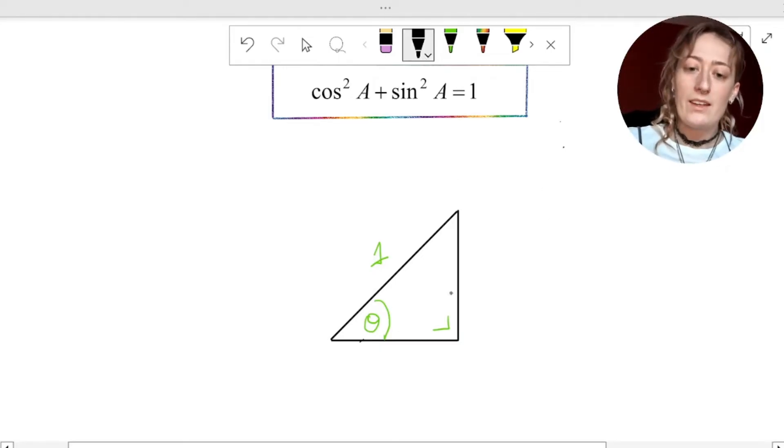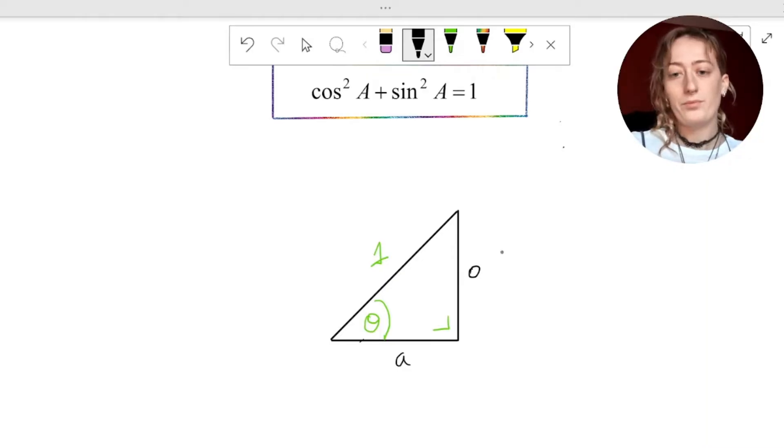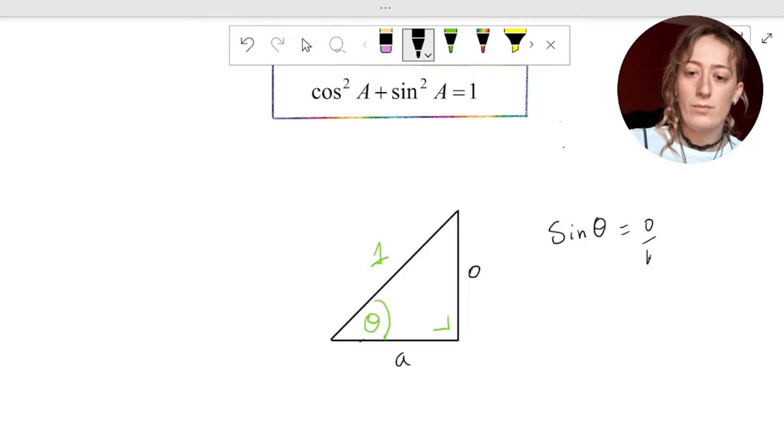So the opposite side is the side opposite the angle theta, mark that as O, and the adjacent side is just the other side remaining. Now sine theta, we know, is equal to opposite over hypotenuse. But the hypotenuse here is equal to 1. So this is automatically equal to O over 1. Anything over 1 is just itself.